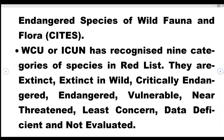WCU or IUCN has recognized nine categories of species in the Red List. They are: Extinct, Extinct in the Wild, Critically Endangered, Endangered, Vulnerable, Near Threatened, Least Concerned, Data Deficient, and Not Evaluated. These are the nine categories.